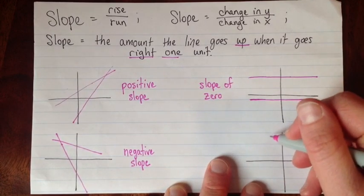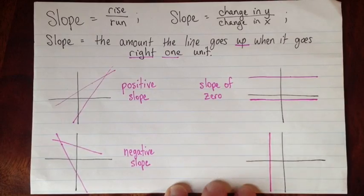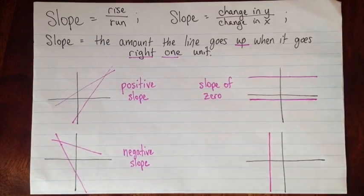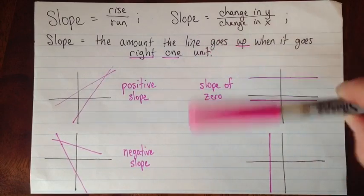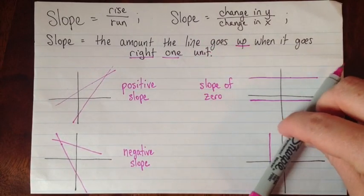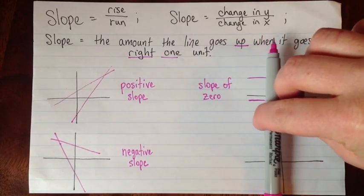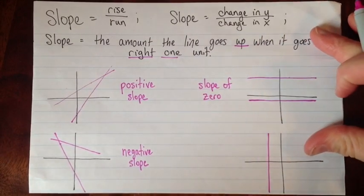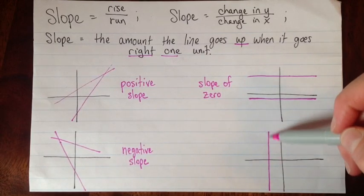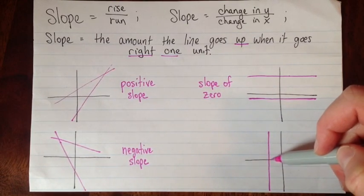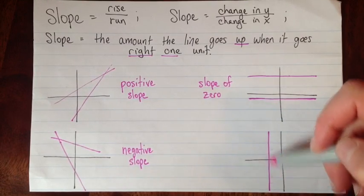Now the only other case is a vertical line. This one is slightly tricky in a way. The zero slope was between positive and negative, and this slope also is. Here's a positive line, we move it over, it becomes negative, but this is in between here. And in this case, we're going up infinitely fast. And in fact, we don't know as we go right, are we going up infinitely fast or are we going down infinitely fast?